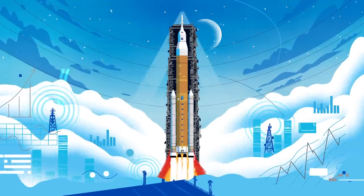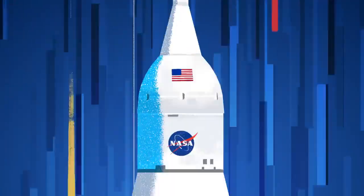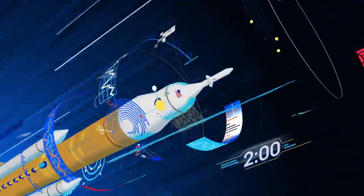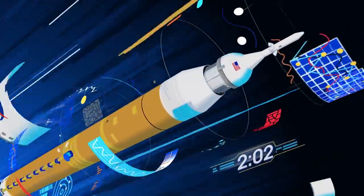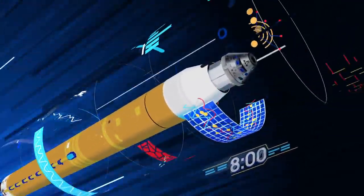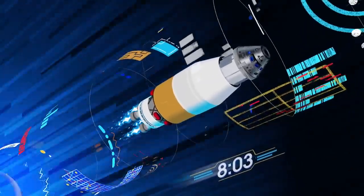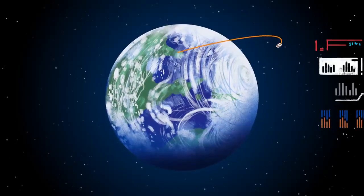All four RS-25 engines and the two solid rocket boosters come to life thundering our crew upwards. Two minutes after ignition, the solid rocket boosters are spent and released. Eight minutes after launch, the core stage is depleted and separated. The upper stage fires briefly, placing Orion into a parking orbit around the Earth.